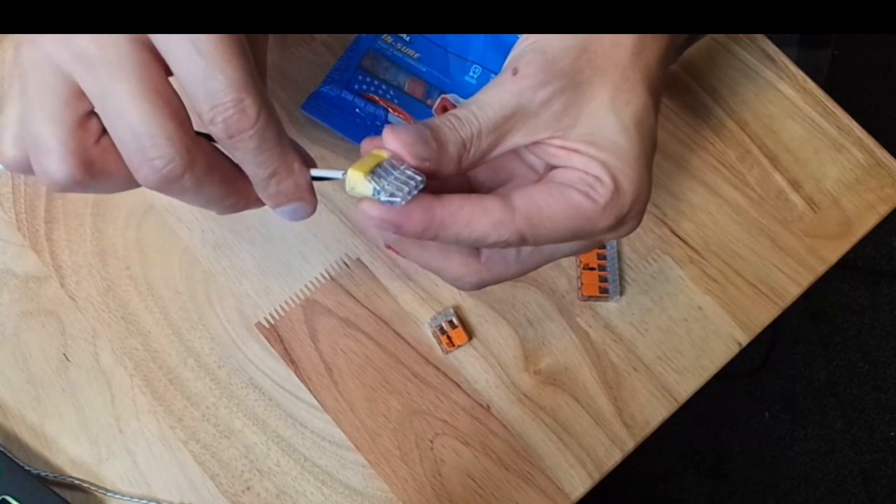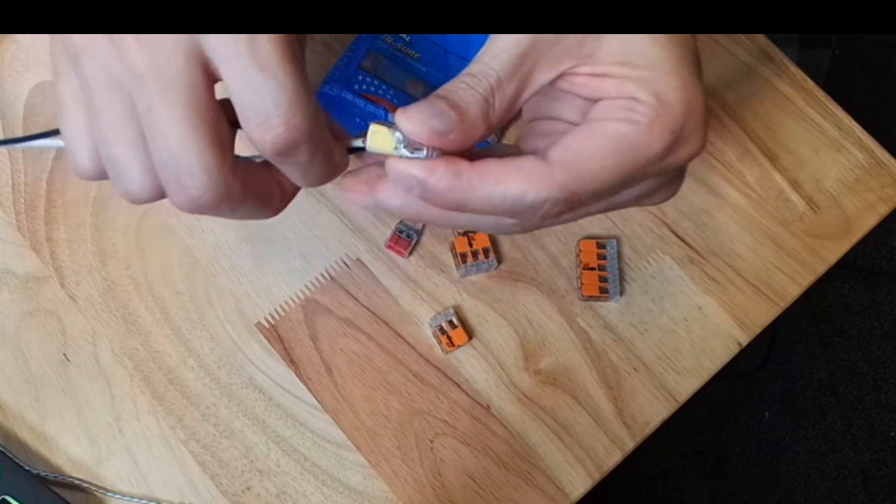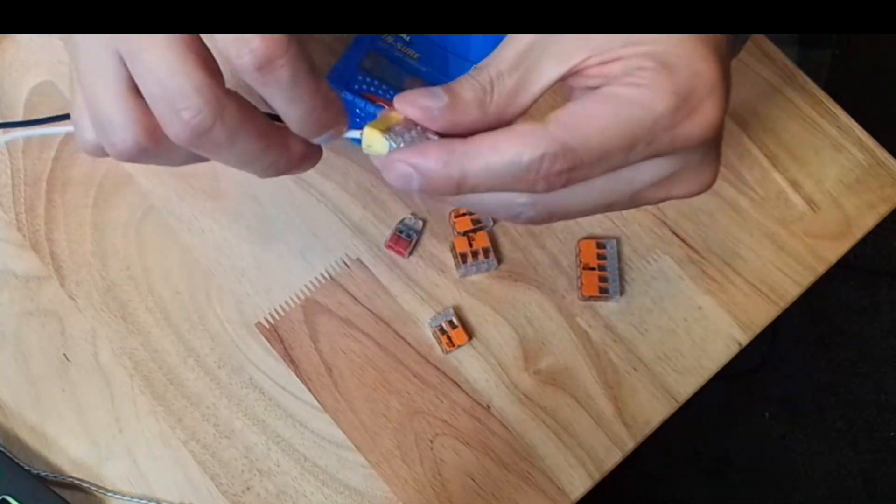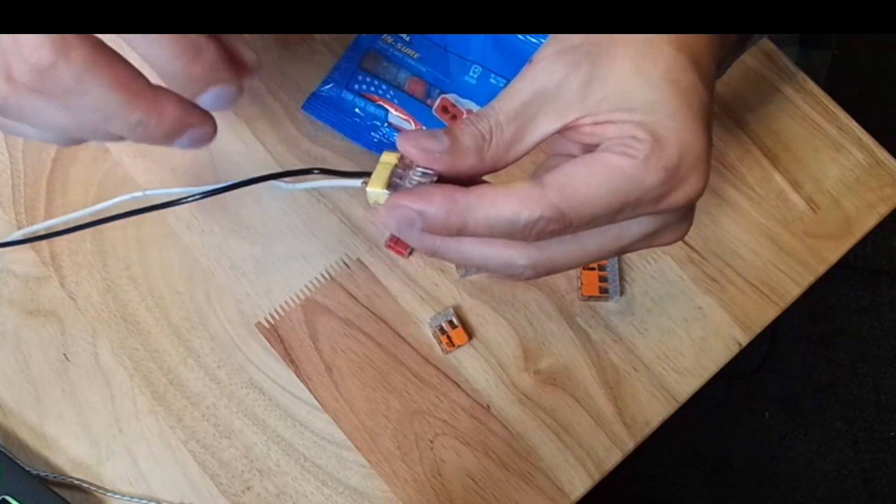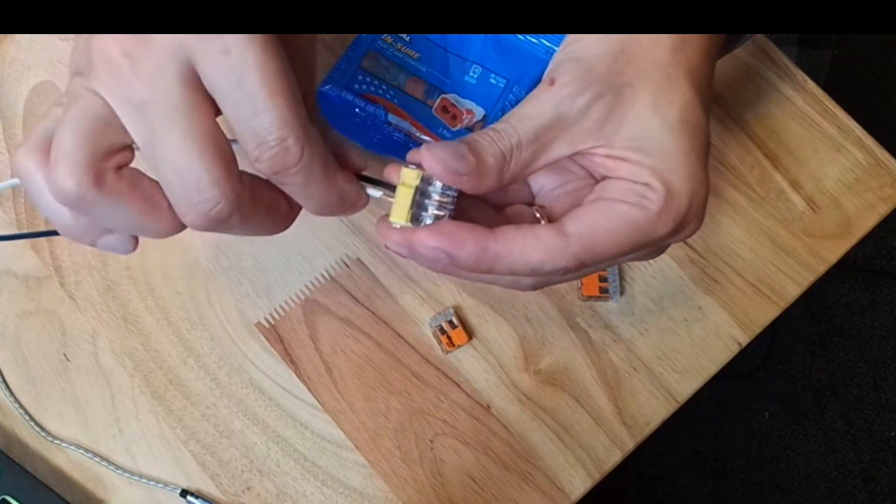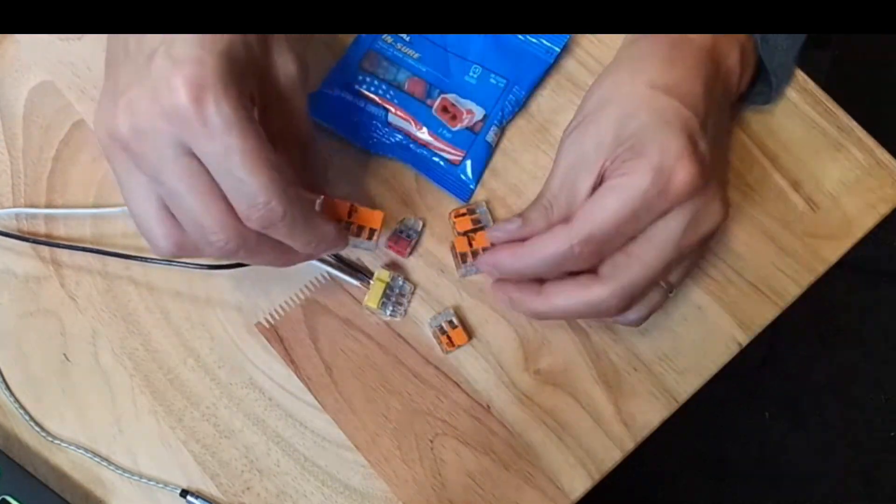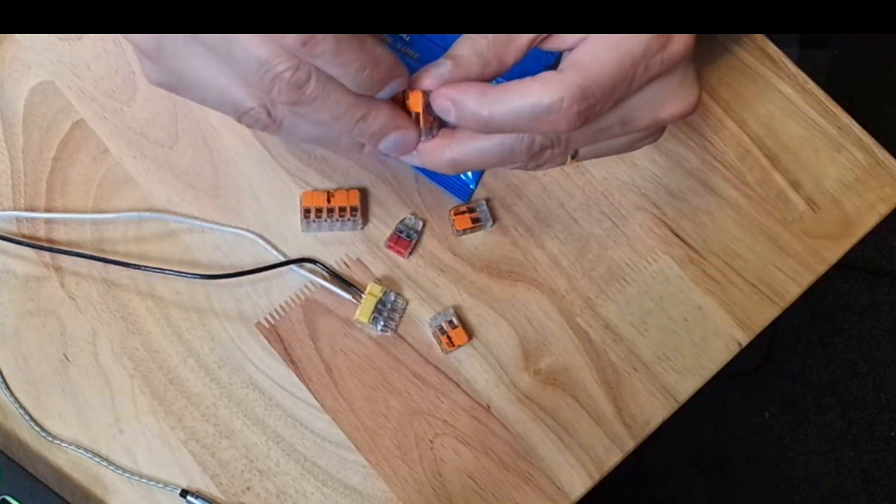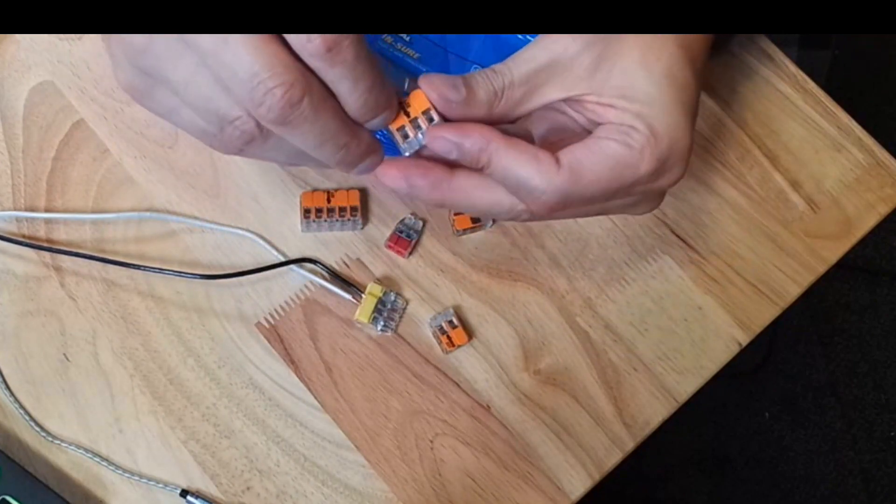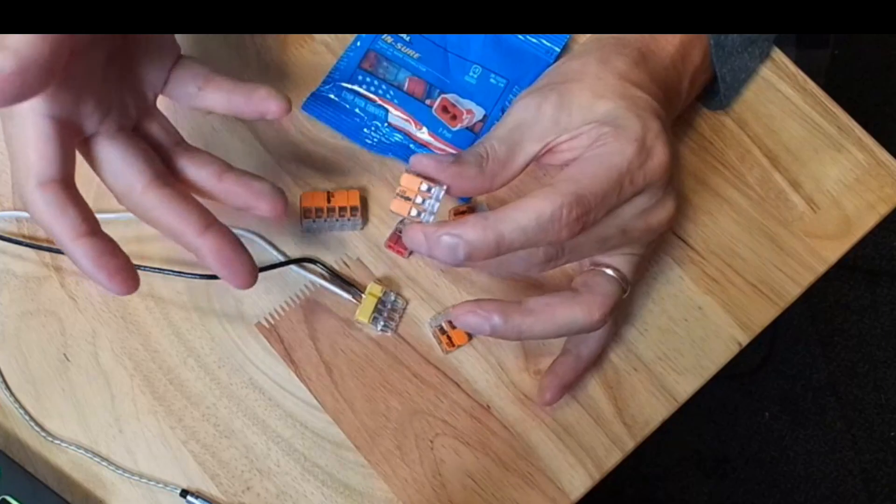They're UL rated, but it is difficult to take them apart and change them out. So I'd consider that more of a permanent connection, but it is fast and easy and non-intimidating for DIY work. Whereas the Wago connectors are great for hobbyists or when you're not sure how something's going to go together and you want to test it.